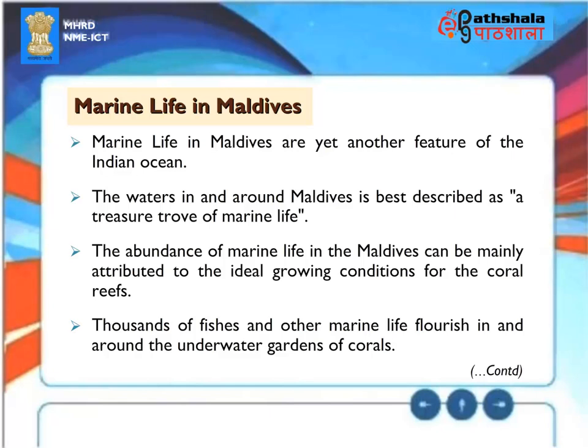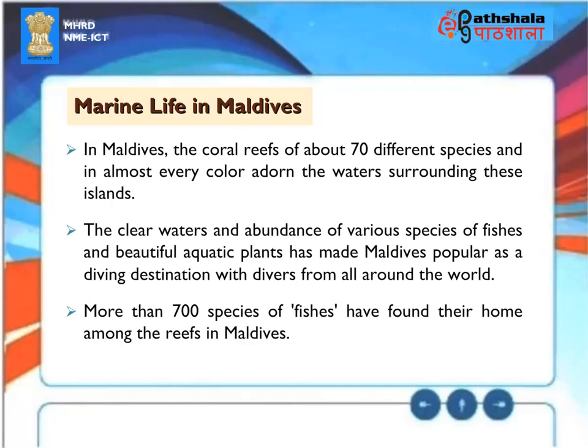Marine life in Maldives. Marine life in Maldives is yet another feature of the Indian Ocean. The waters in and around Maldives is best described as a treasure trove of marine life. The abundance of marine life in the Maldives can be mainly attributed to the ideal growing conditions for the coral reefs. Thousands of fishes and other marine life flourish in and around the underwater gardens of corals. In Maldives, the coral reefs of about 70 different species and in almost every color adorn the waters surrounding these islands. The clear waters and abundance of various species of fishes and beautiful aquatic plants has made Maldives popular as a diving destination. More than 700 species of fishes have found their home among the reefs in Maldives.